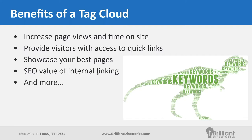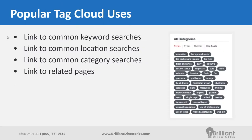Some popular tag cloud use cases for a membership or directory website: on search results or post pages, you may want to link to common keywords that are searched. You could create different tag cloud clusters for different types of content — one just for blog posts, one for member searches by location or popular categories. You may also want to link to your best content or related pages for a specific type of content, and you can decide what's best for your website and your visitors.